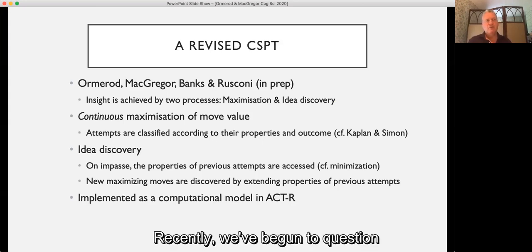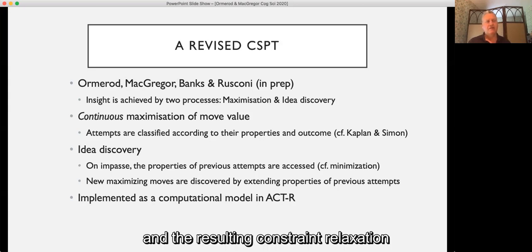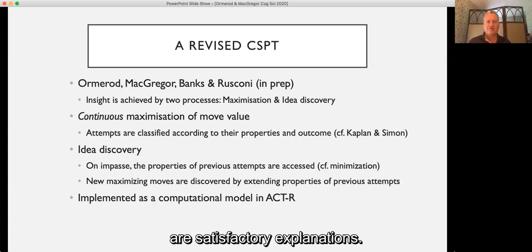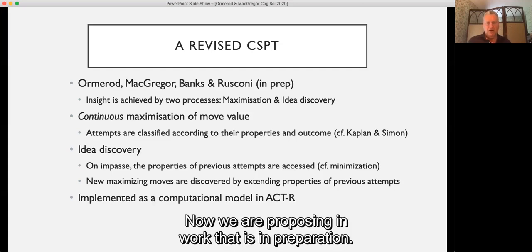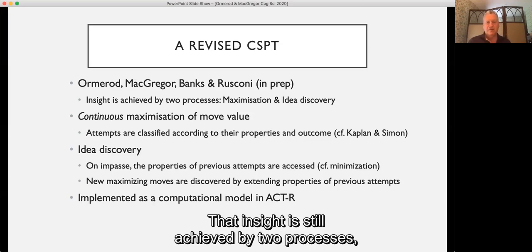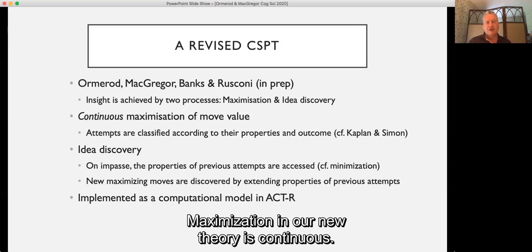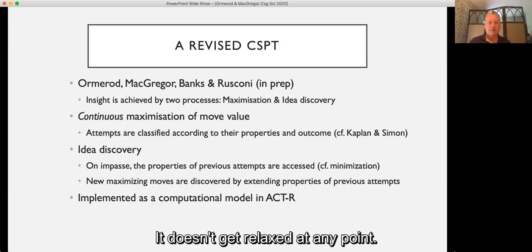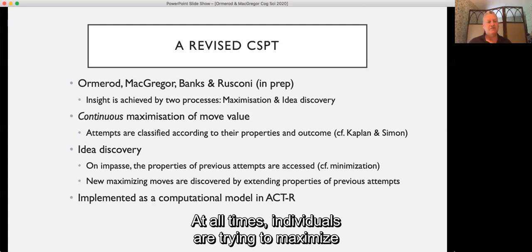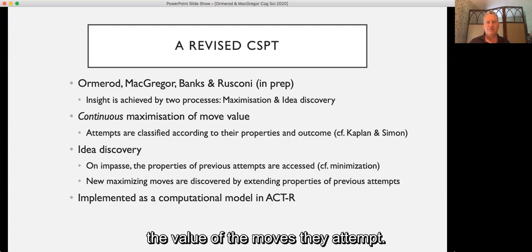Recently we've begun to question whether this notion of criterion failure and the resulting constraint relaxation are satisfactory explanations. Now we are proposing in work that is in preparation that insight is still achieved by two processes, but rather than being maximization and minimization heuristics, maximization is still there but we've replaced minimization with a general idea discovery module. Maximization in our new theory is continuous. It doesn't get relaxed at any point. At all times individuals are trying to maximize the value of the moves they attempt.